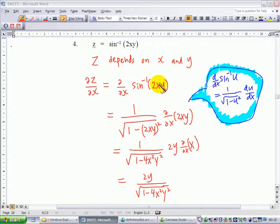We recall that differentiation of sine inverse u is 1 over square root of 1 minus u squared, then multiply by du/dx. So in this case, my u is equal to 2xy. Now you get 1 over square root of 1 minus u squared, which is 2xy.